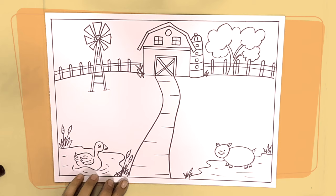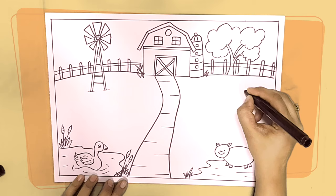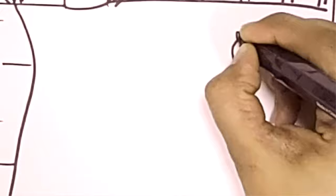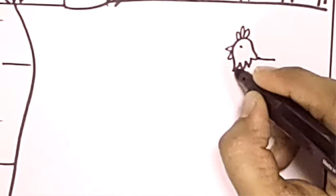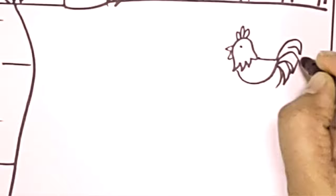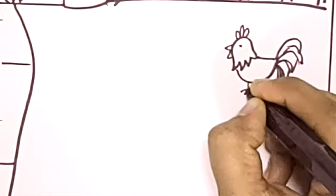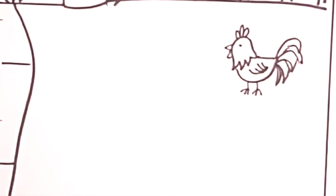Now I'll be adding more animals. First of all I'm adding a rooster family — basically a hen and some chicks alongside. You know how a rooster has a crown on the head and colorful feathers. This is how you may draw a rooster, and then you can have a hen and chicks by its side.